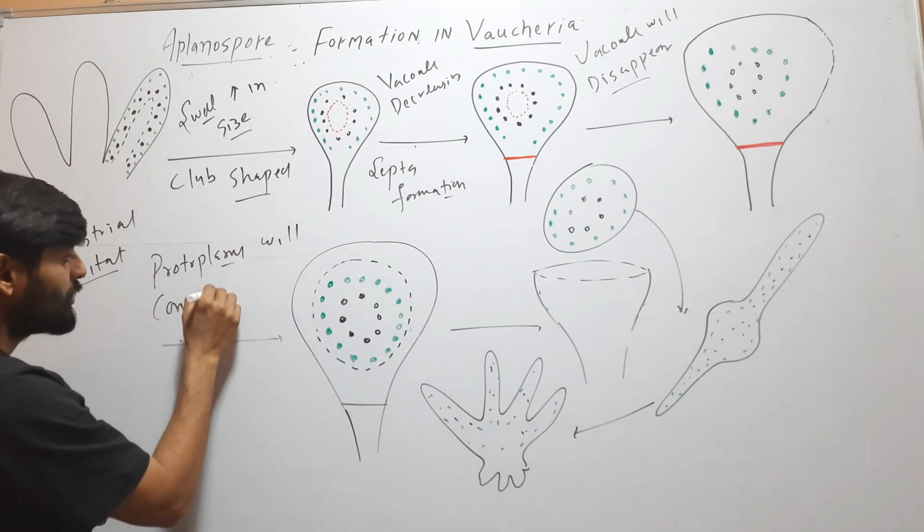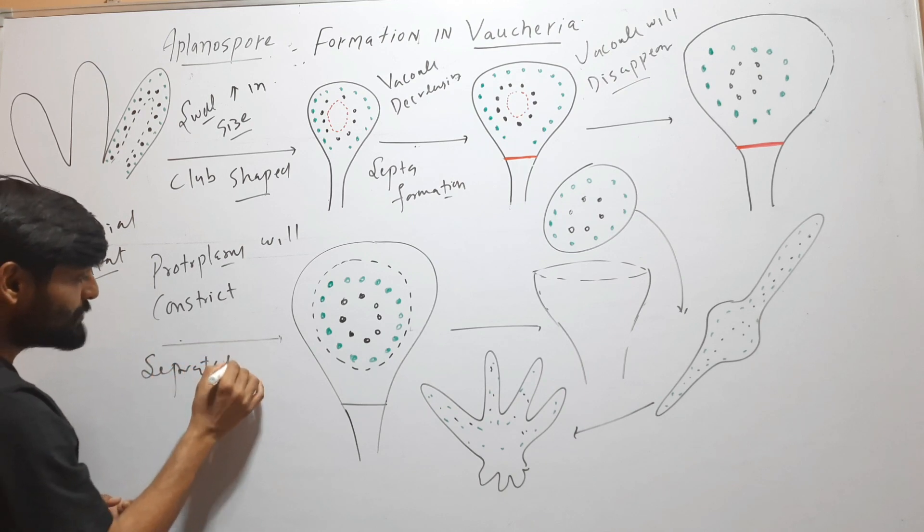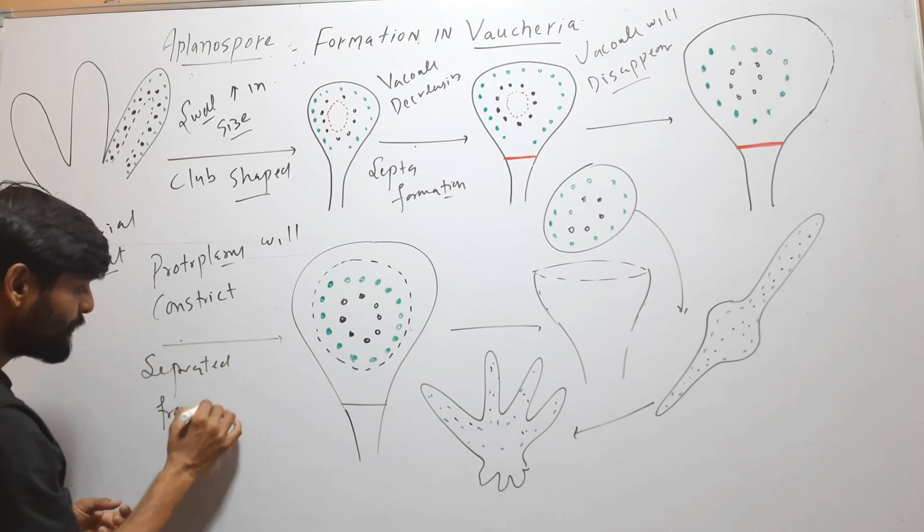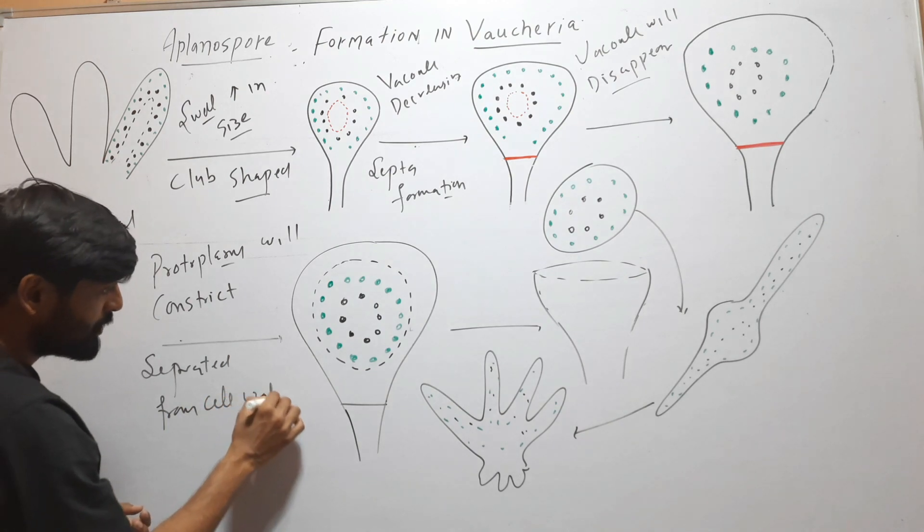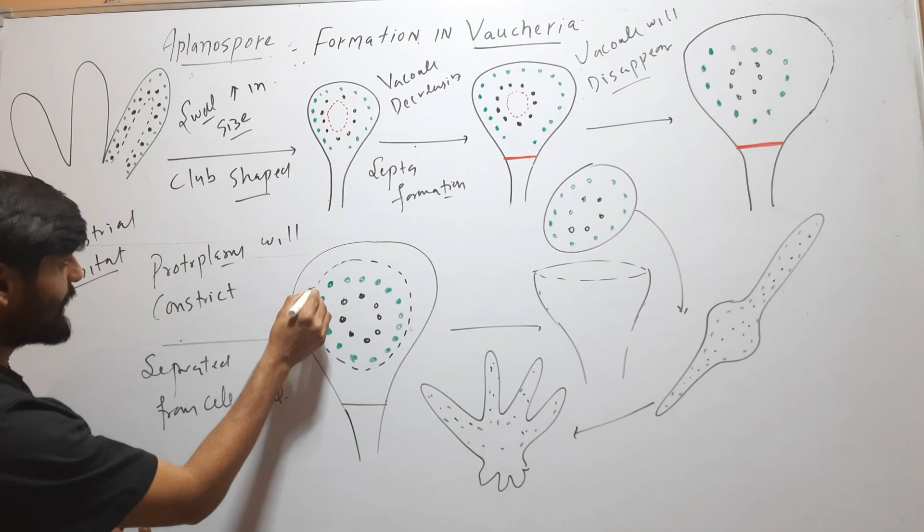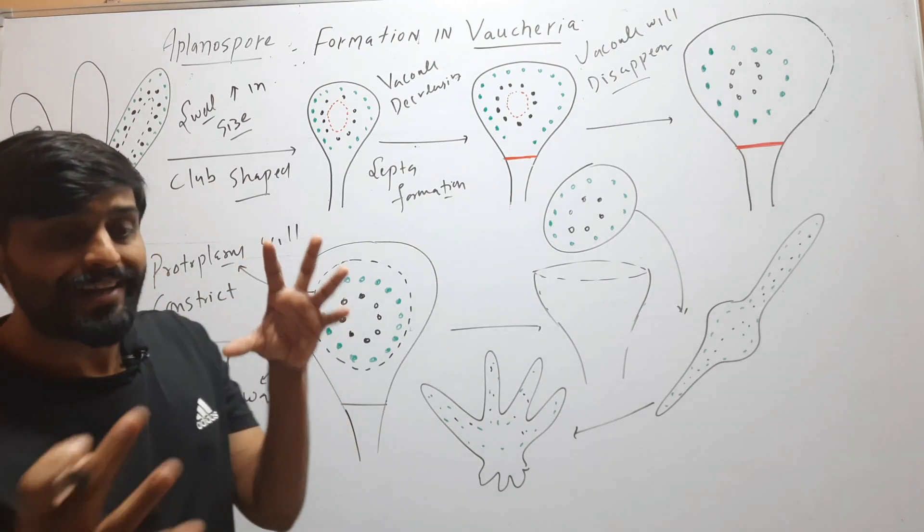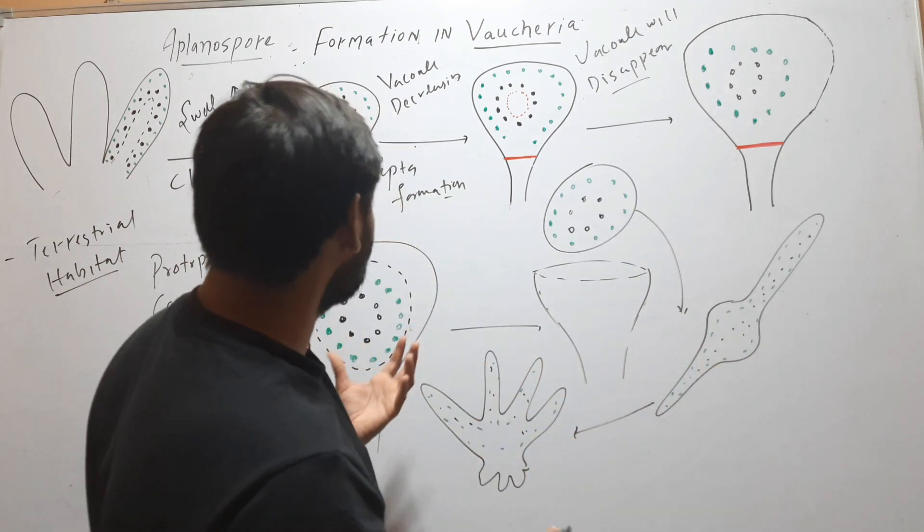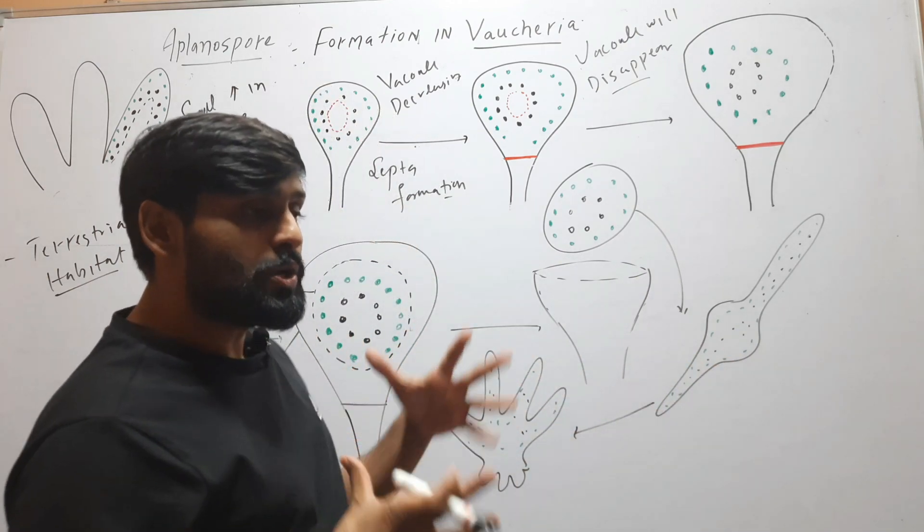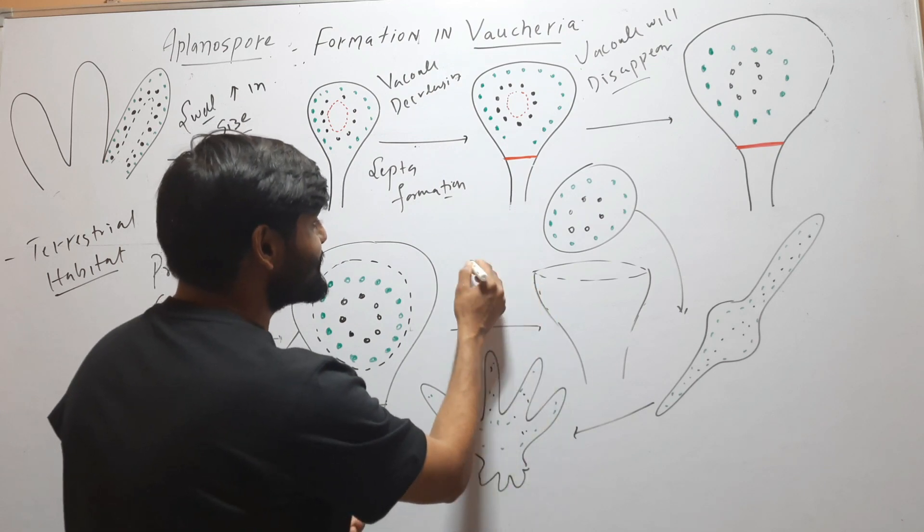The protoplasm will separate and become separated from the cell wall. So here you can see this is the cell wall and this one is the protoplasm. Protoplasm and cell wall are separated. Then after separation of protoplasm from cell wall, this cell wall will disintegrate.